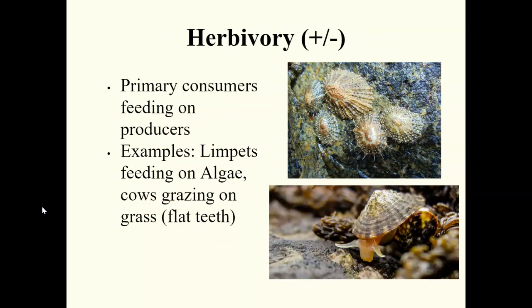Moving on to herbivory, which is a positive/negative relationship. Herbivory is where an herbivore or primary consumer feeds on a producer. Examples include limpets — single-shelled organisms with a soft body inside, somewhat snail-like — that feed on algae. Herbivores don't only feed on plants; they feed on any photosynthetic organism. Other examples include cows with flat teeth for eating grass, zebras, and giraffes eating leaves. The animal always benefits, while the producer is harmed because it is being eaten.